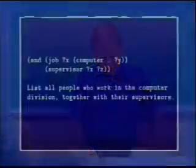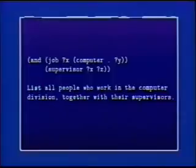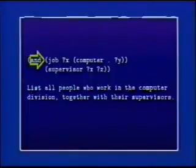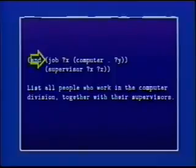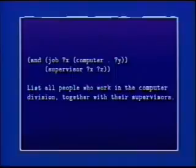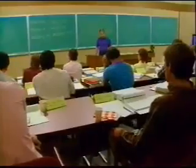Here's one. This says: tell me all the people who work in the computer division together with their supervisors. The way I write that as a query is: AND — the job of ?x is computer dot ?y, and the supervisor of ?x is ?z. I have three variables: ?x, ?y, and ?z. The same ?x appears in both clauses — x works in the computer division, and the supervisor of x is z. So one means of combination is AND.